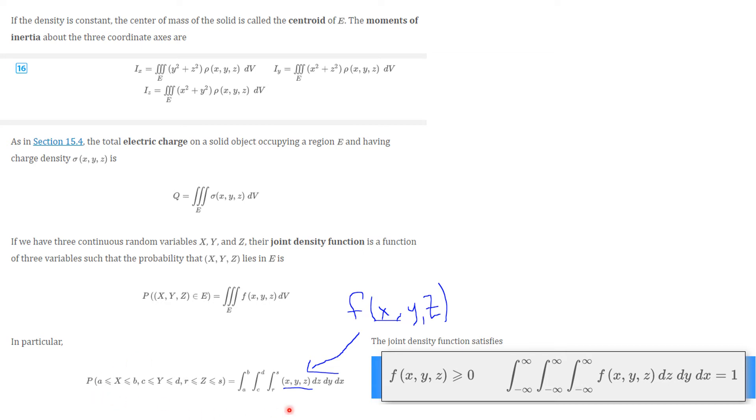And so this could end up being an iterated integral like this. So if you wanted to compute the probability that x is between a and b, y is between c and d, and z is between r and s, you would compute this integral. And there is a typo here. Instead of x, y, z, this should be f of x, y, and z.